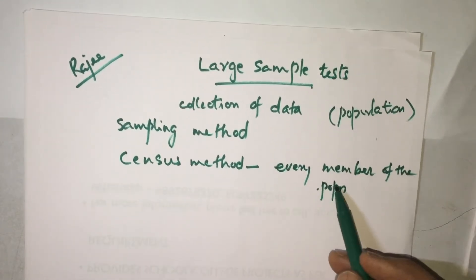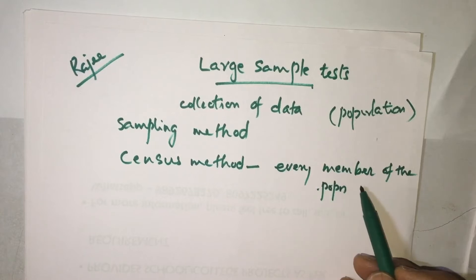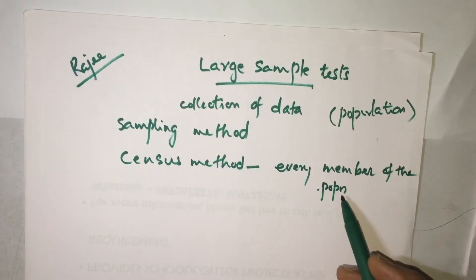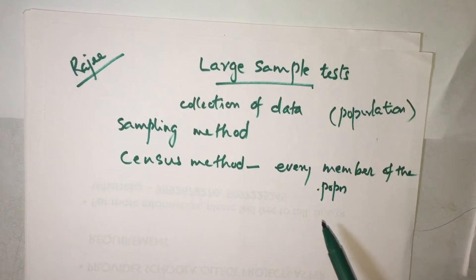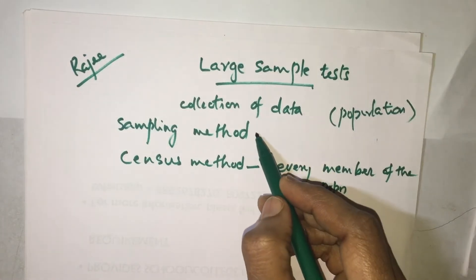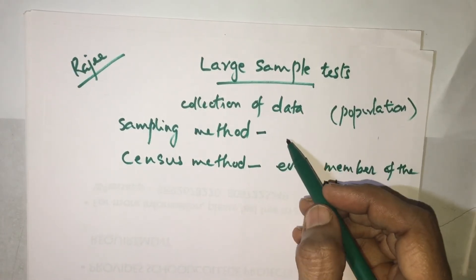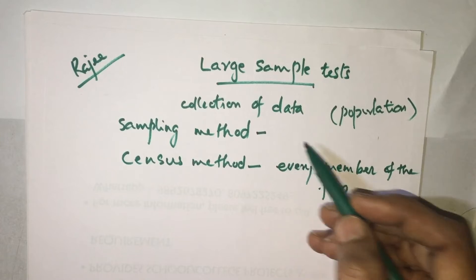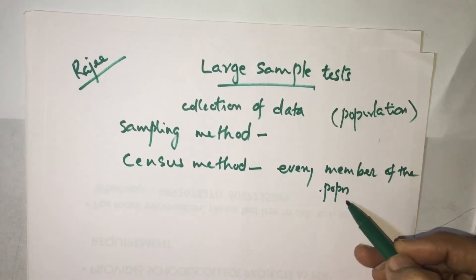It doesn't mean that every member of the population must be human beings — it can be anything. Any object under study is a population, and any sub-object under study is a member of that population. Sampling method means data is collected from a sample, which is a group collected from the population.